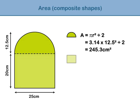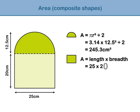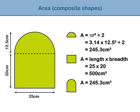Now let's look at the area of the rectangle. The length of the rectangle is 25 centimetres and the height is 20 centimetres. The area of the rectangle equals the length times the breadth, which equals 25 times 20, which equals 500 centimetres squared. To calculate the area of the composite shape, we must add the area of the half circle to the area of the rectangle. 245.3 centimetres squared plus 500 centimetres squared gives us a total area of 745.3 centimetres squared.